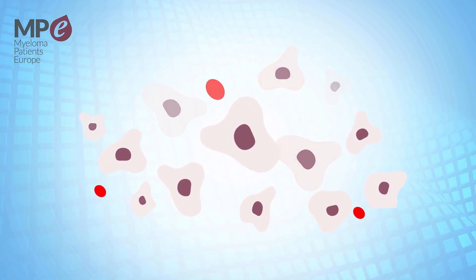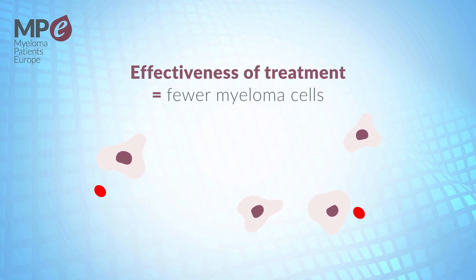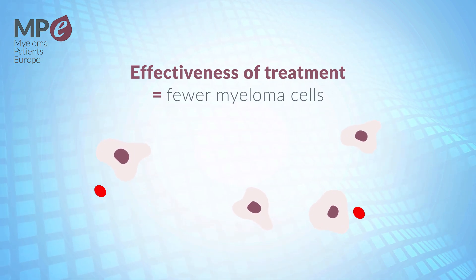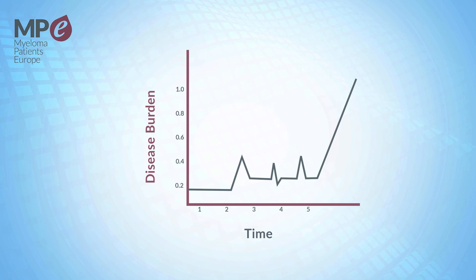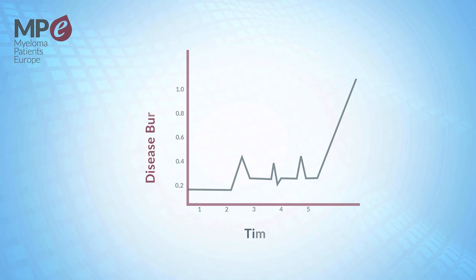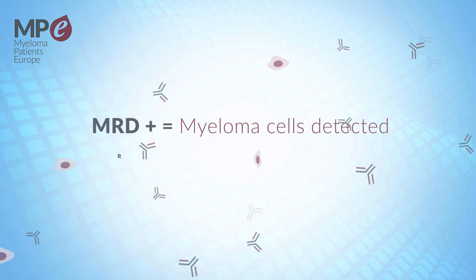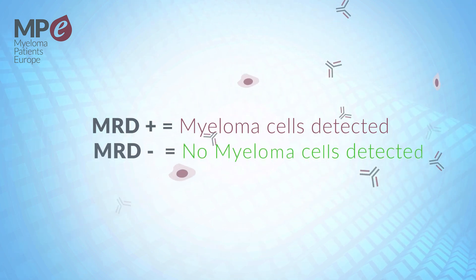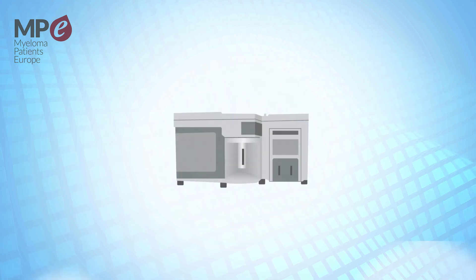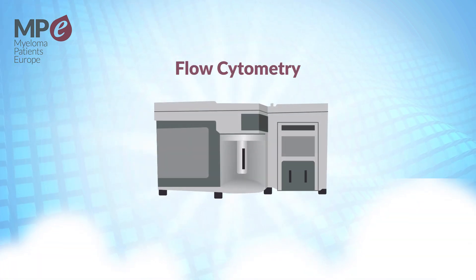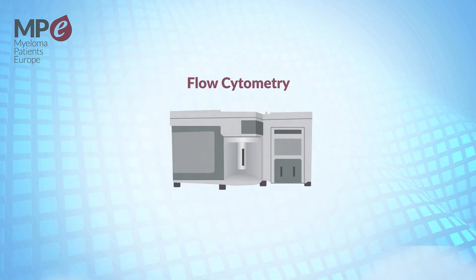MRD testing helps measure the effectiveness of a treatment by detecting the remaining cells, therefore helping to predict risks of relapse. The International Myeloma Working Group defines MRD negativity as no myeloma cells being detected in 100,000 cells through the use of sensitive laboratory techniques known as flow cytometry or next generation sequencing.